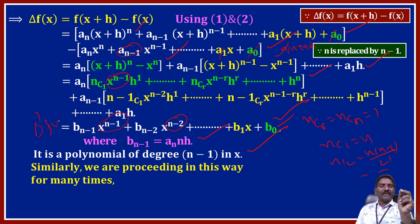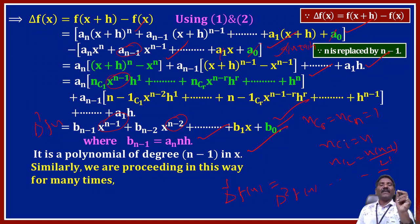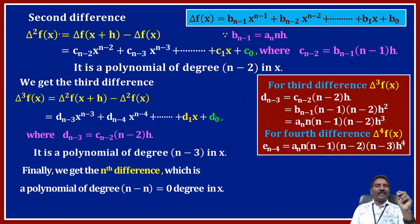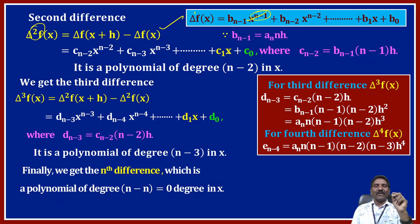So the first difference del power 1 of f of x is a polynomial of degree n minus 1 in x. Continuing, the second difference del squared f of x equals del of [f(x+h) minus f(x)]. Since the first difference is already a degree n-1 polynomial, the second difference del squared f of x gives c_(n-2) · x^(n-2) plus c_(n-3) · x^(n-3) plus and so on, c_1 · x plus c_0, where c_(n-2) equals b_(n-1) · (n-1) · h, and b_(n-1) equals a_n · n · h.